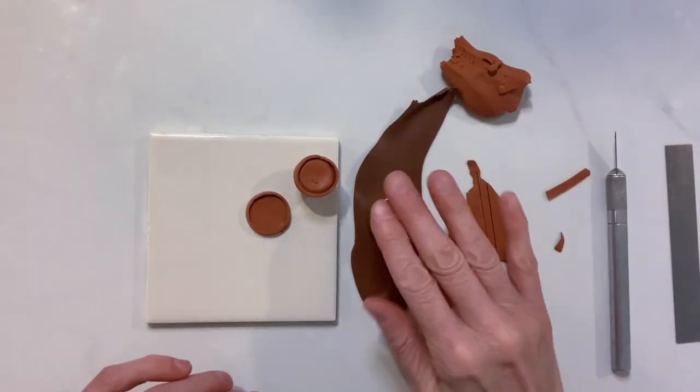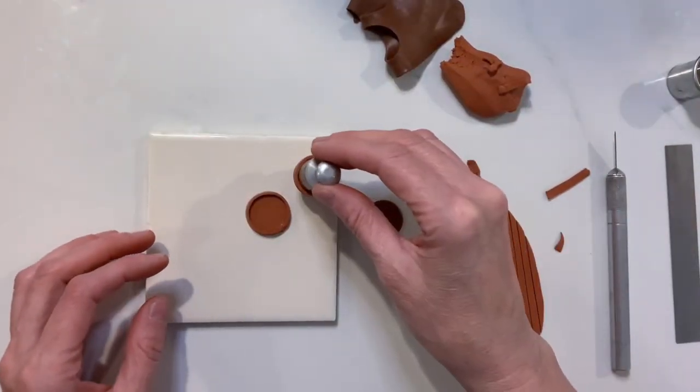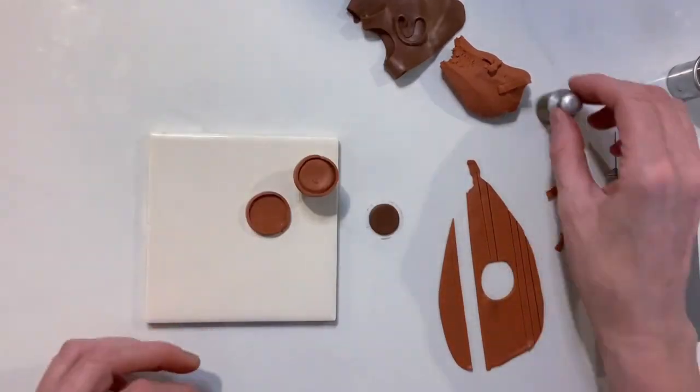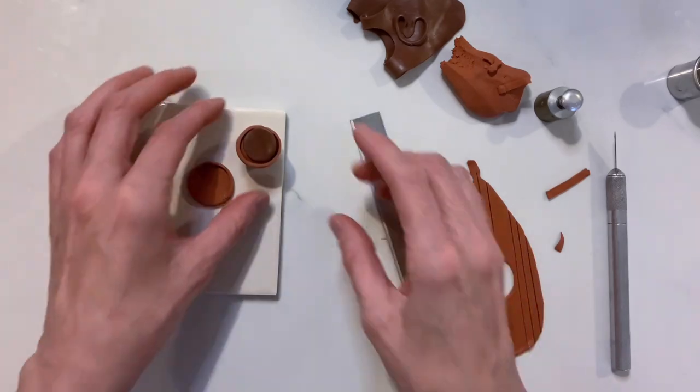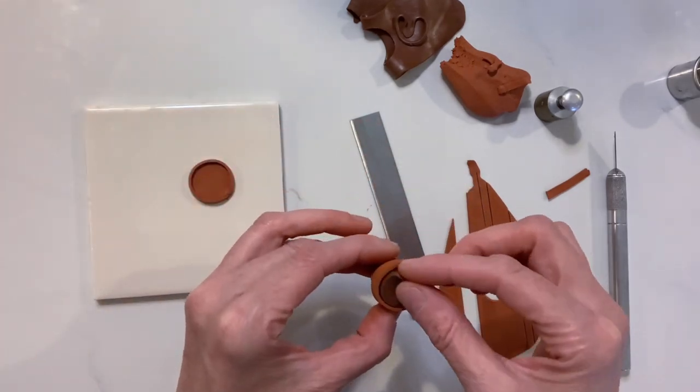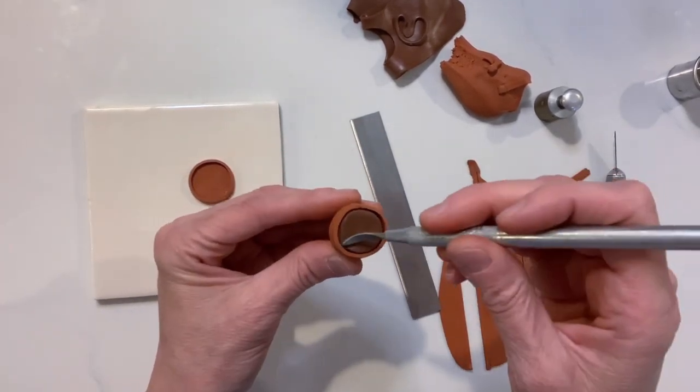Now we will use our largest circle cutter to cut out a circle from a slab of dark brown clay. Run that clay through your pasta machine on a number one or two setting. You're going to take that little disc and place it right in the center of the terracotta pot.